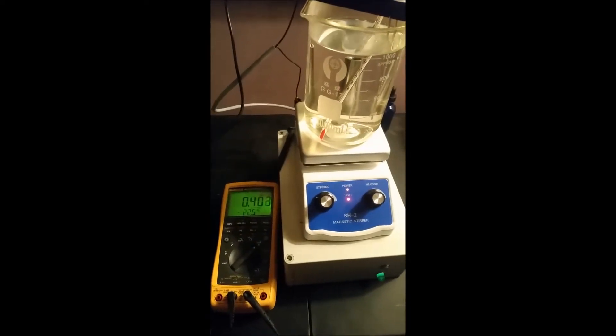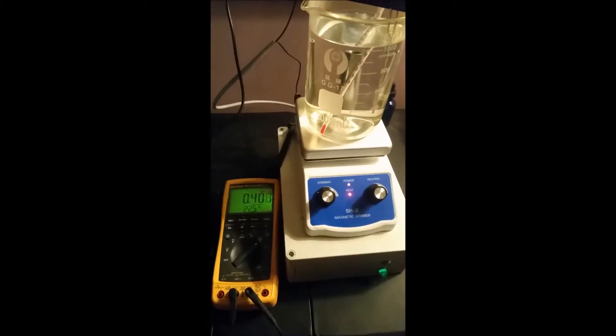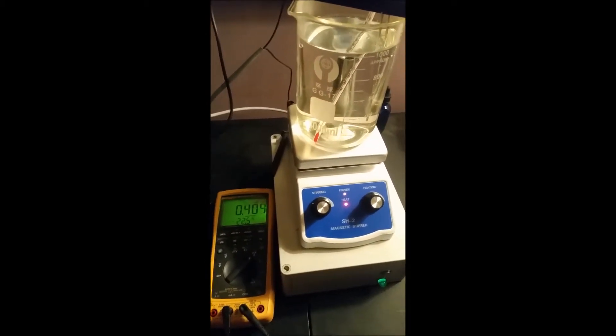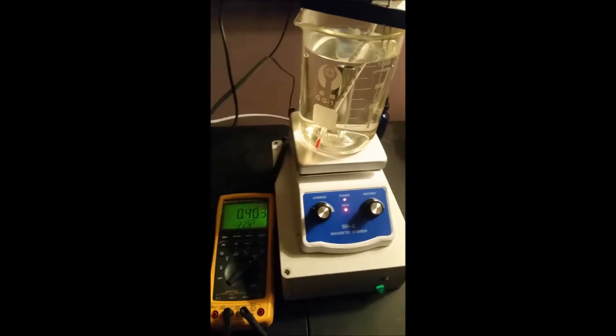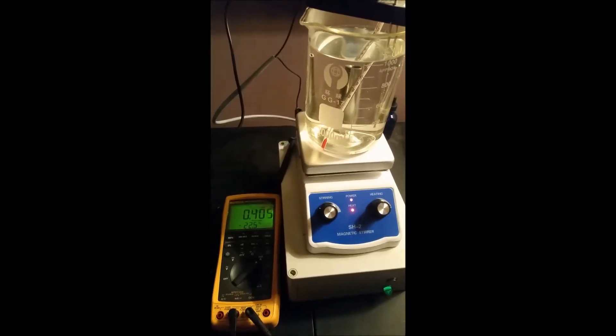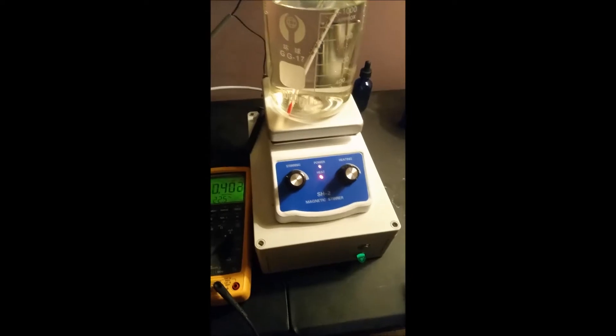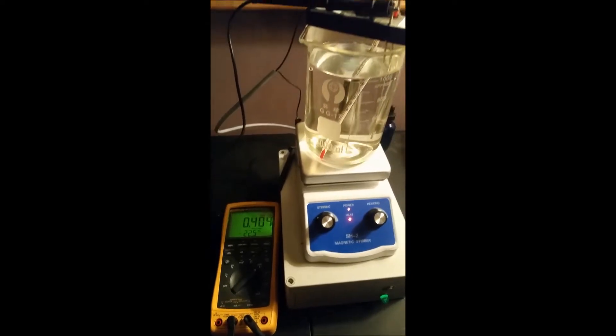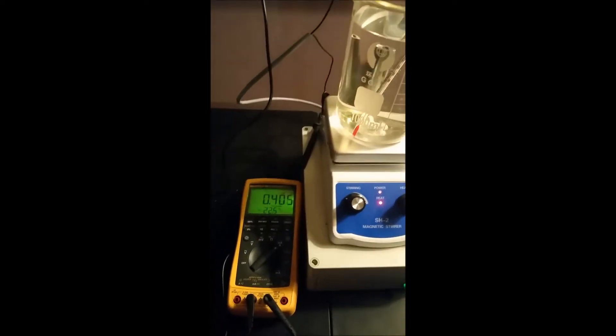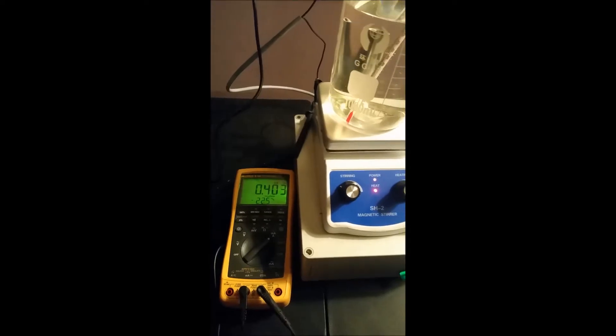So we're back here again with the colloidal silver generator. I am starting a second batch and I just wanted to show you what a difference it makes when I add the electrolyte in the current. So I have the power supply turned on and the meter is hooked up. You can see I'm only getting half of a milliamp approximately.